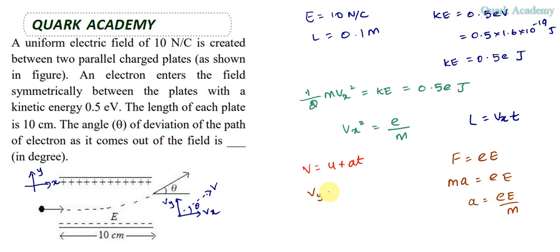VY equals 0 initially, since it doesn't have a Y component, plus eE by M. You may think the electron charge is negative, but those negative signs decide the direction of motion, which is already given.